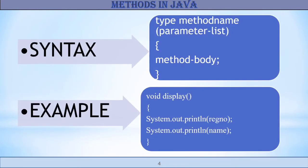Now let us see the methods declaration. A Java method is a collection of statements that are grouped together to perform an operation. Methods are declared inside the body of the class.